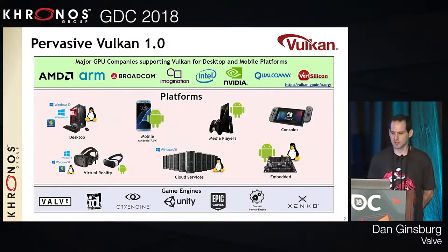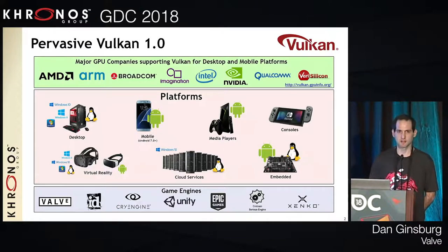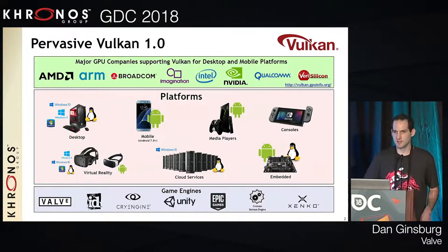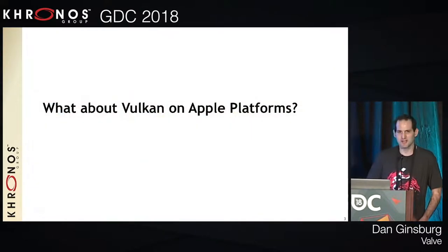As Tom mentioned, Vulkan has achieved widespread pervasiveness. Nearly all major GPU companies have drivers. It's supported on Windows 7, 8, 10, Linux, Android on mobile phones and media players. Just recently the Nintendo Switch passed Vulkan 1.1 conformance. At Valve, we've used Vulkan to enable VR and SteamVR — on Linux the entire stack runs through Vulkan, both compositor and client. On Windows the client is based on Vulkan using the Vulkan external memory extensions for interop. One of the major questions we get asked is: what about Vulkan on Apple platforms?